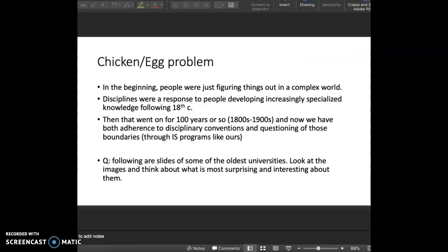So yeah, to kind of sum up, in the beginning, people were just figuring things out in a complex world. And disciplines were a response to people developing increasingly specialized knowledge following the 18th century. So the 1800s or so. That went on for 100 years or so from the 1800s to the 1900s. And now what we have in the following century, we have adherence to disciplinary conventions, because those have helped evolve modern universities, but also the questioning of those boundaries through interdisciplinary studies programs like ours.